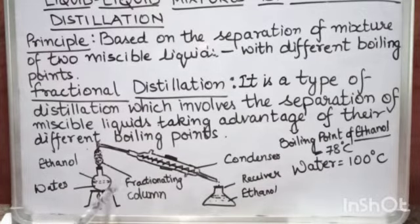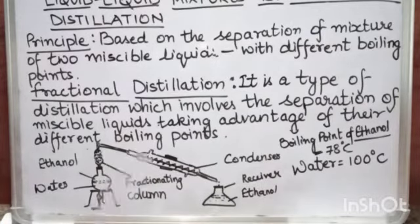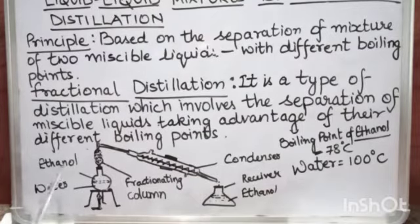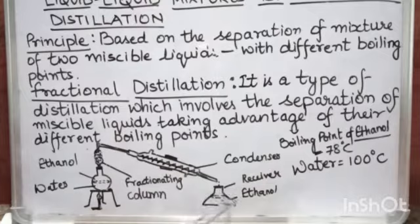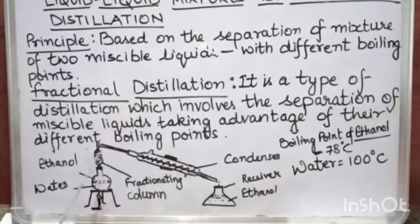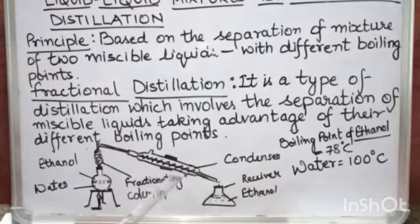The mixture is taken in the distillation flask and heated slowly. The component with the higher boiling point — water — will remain behind in the distillation flask after condensation. Ethanol, with the lower boiling point of 78°C, will collect in the receiver. Ethanol has the lower boiling point, so it boils first, turns into vapors first, passes through the fractionating column, then through the condenser, condenses into liquid, and is collected in the receiver.